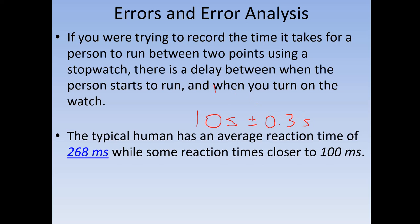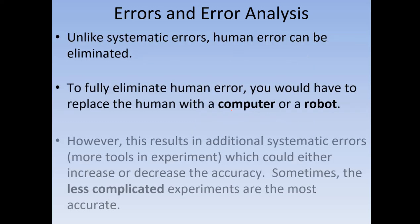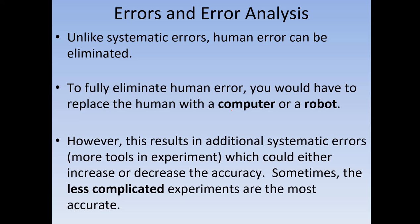There are ways to actually limit this. The only real way to eliminate human error is to replace the human with a computer. That's something different from systematic error — with systematic error there's really nothing you can do except make it smaller, but with a human you can completely get rid of the error. The problem is that once we replace the human with a computer or robot, we're going to add in additional systematic error — delay times between the measurement of a device and the recording of the device. At times this could increase accuracy, but it could also decrease it. So often, the less complicated an experiment, the more accurate it is — keep that in mind when designing experiments.